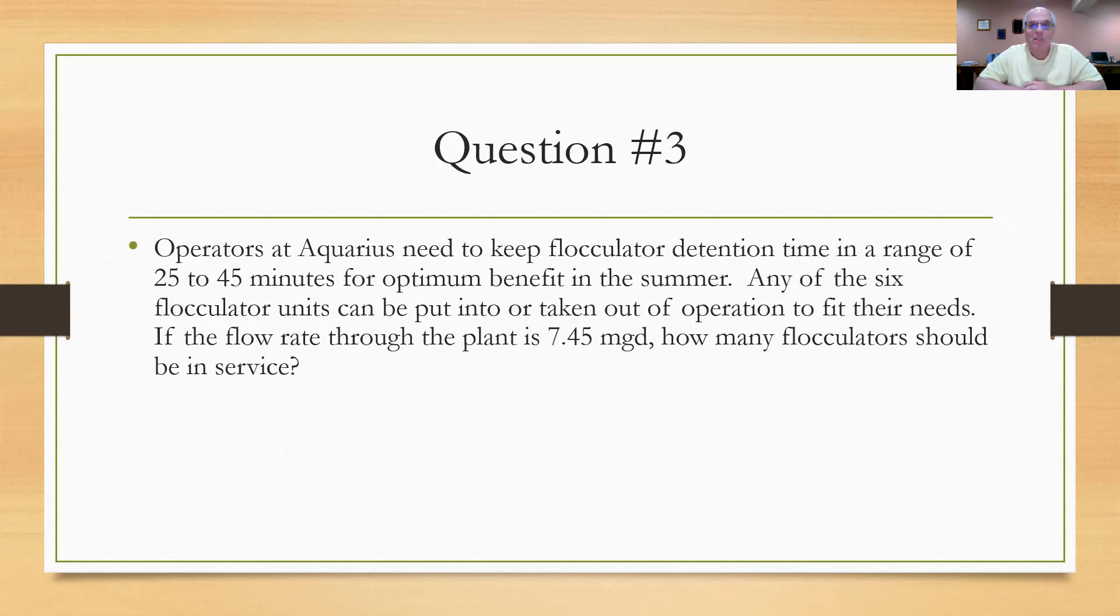And yes, I know it would be a simple matter of taking 20 and divide it by six and see that each one is worth a little over 3 million. So if I'm at 7.4 million, I would need a couple, two or three flocculators on. That's easy. But let's do the math so we at least understand how the principle works. Let's set it up this way.